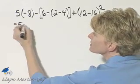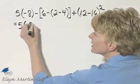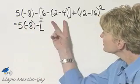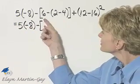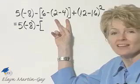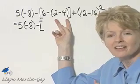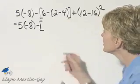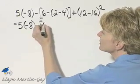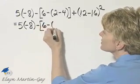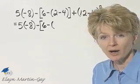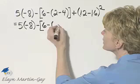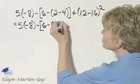I'll go ahead and write that as 5 times negative 8 minus, let's see what we have inside this set of brackets. I have 6 minus, well within the set of brackets I have a set of parentheses. So let's work within the innermost set of parentheses first. That's 6 minus 2 minus 4. If you need to, go off to the side and write it as 2 plus negative 4. But 2 minus 4 is negative 2